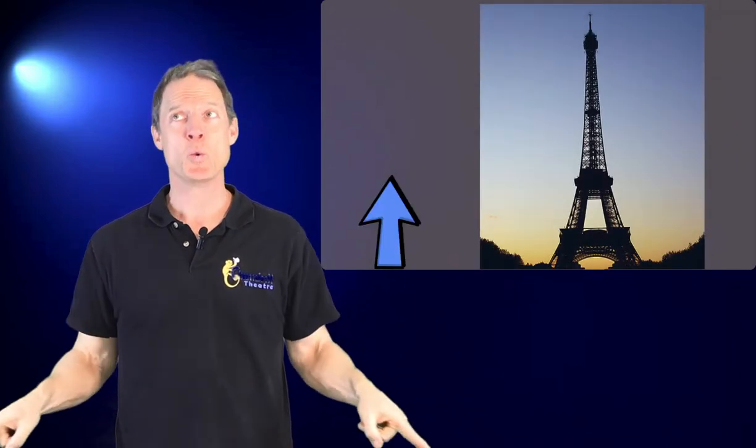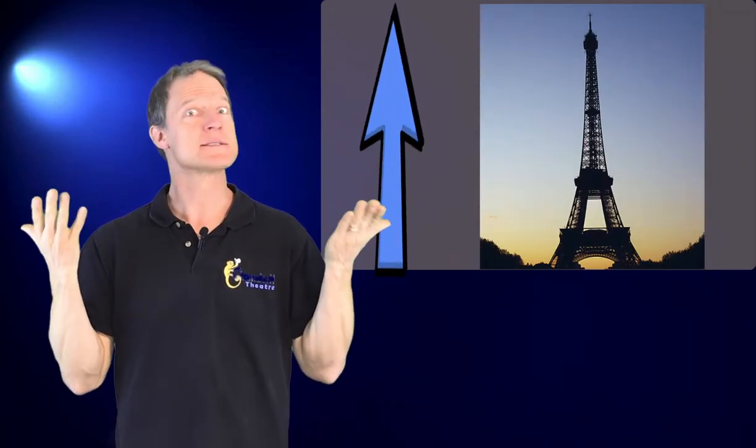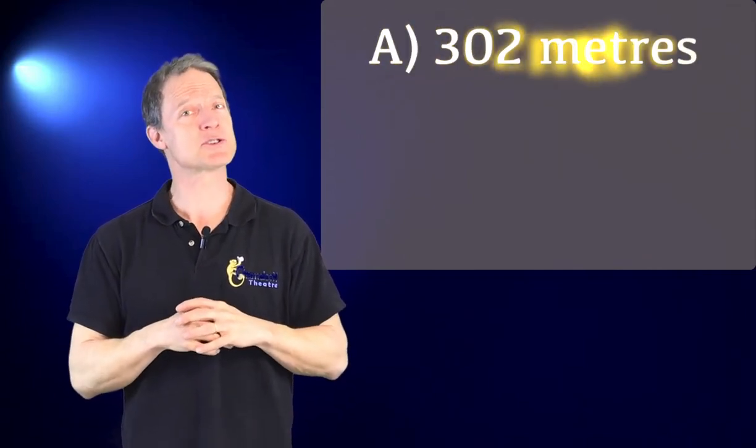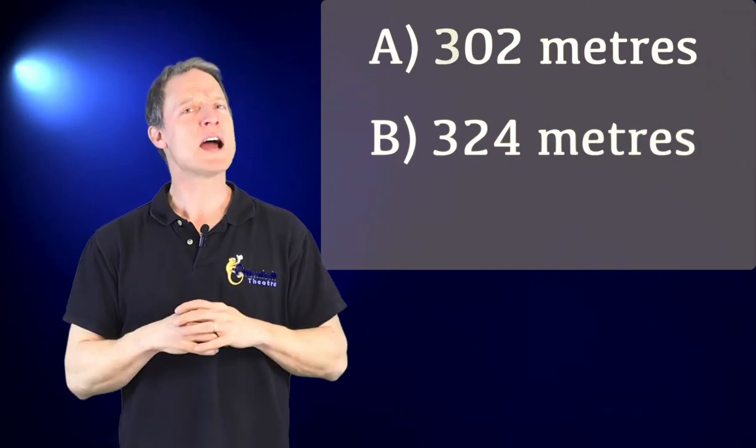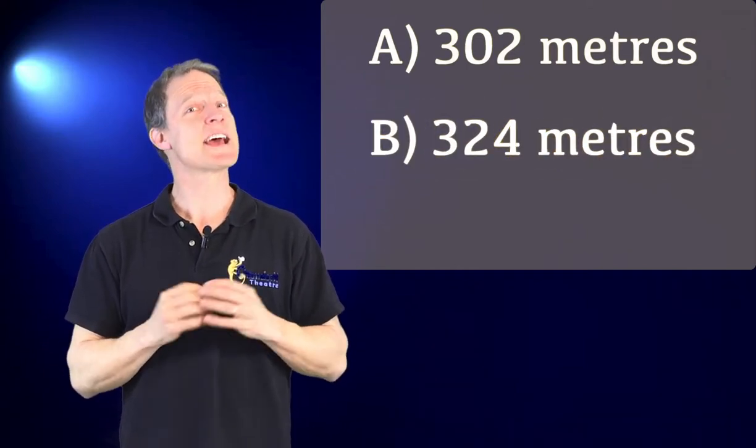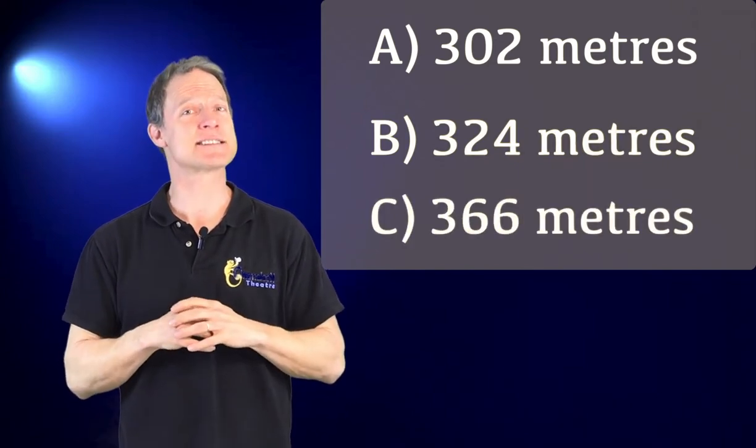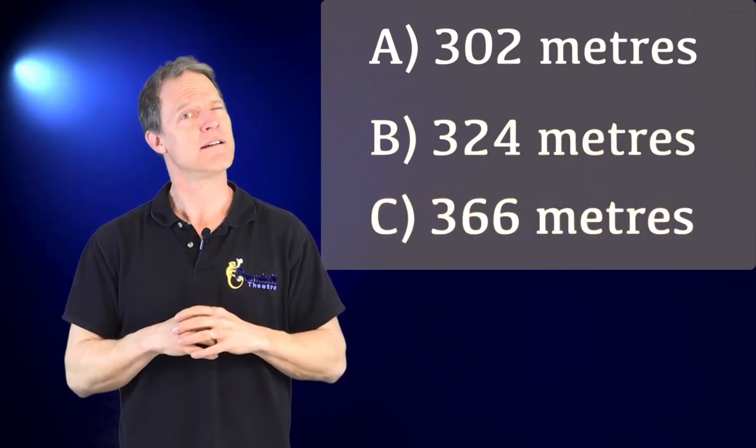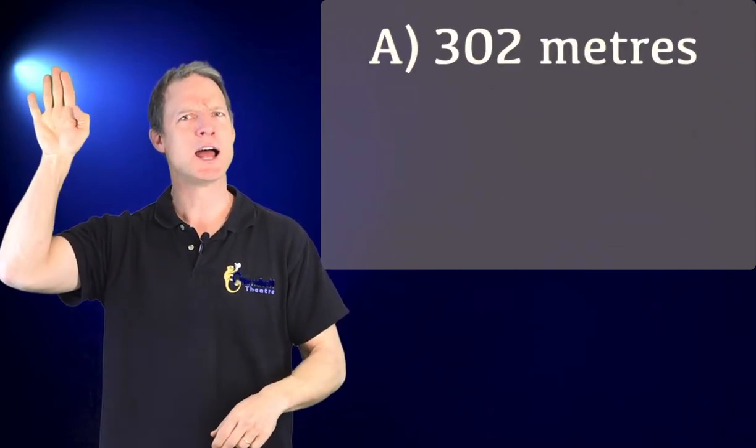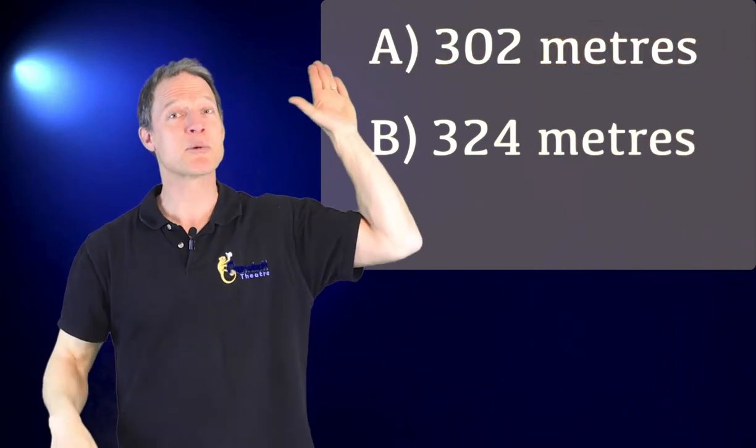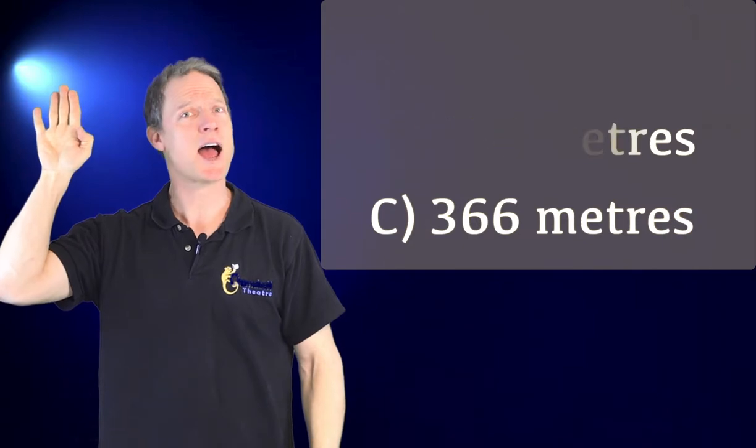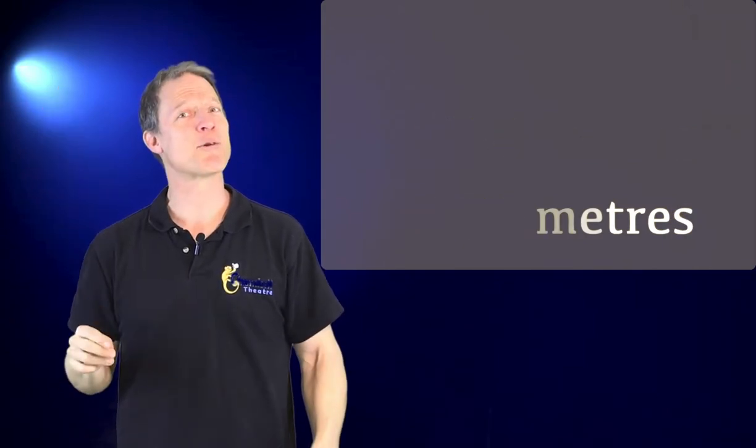The next question is: how tall is the Eiffel Tower? Is it A) 302 meters tall, B) 324 meters tall, or C) 366 meters tall? Let's do the voting. Who thinks it's A: 302? B: 324? C: 366?